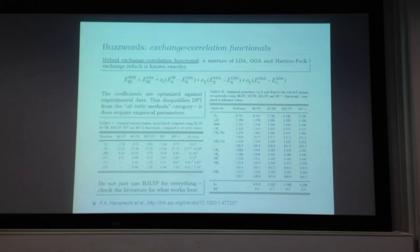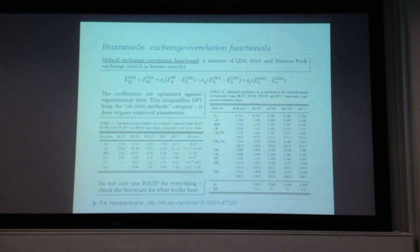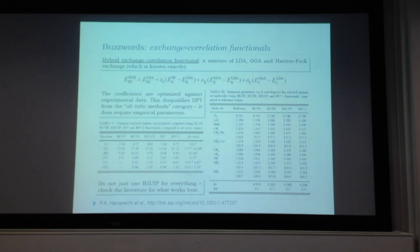Geometries are where DFT really shines. For a set of molecules, the standard deviation from X-ray structures is typically a hundredth of an Ångström and a fraction of a degree. If your only objective is accurate molecular geometry, DFT is your best friend. However, the same warning applies: don't blindly use B3LYP because it is one of the early success stories. It doesn't work well for everything. Check the literature for what works best in each specific situation.